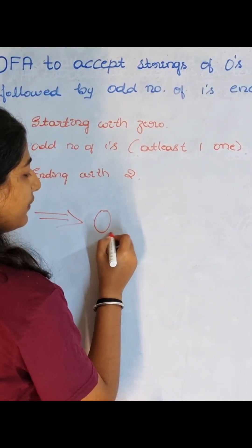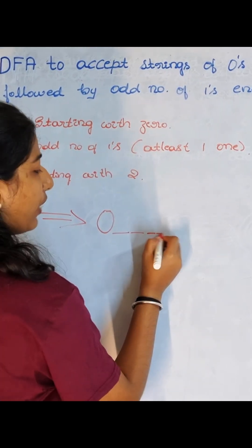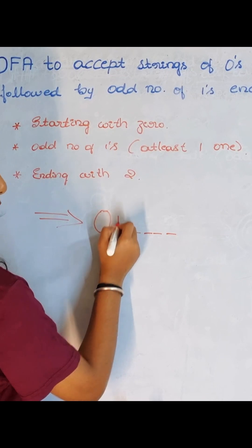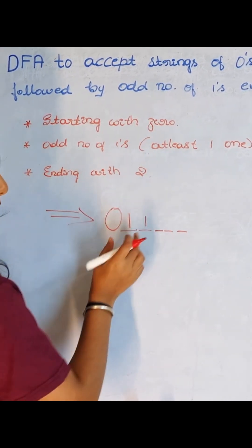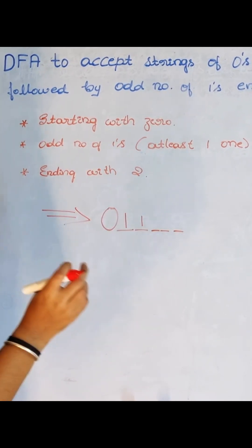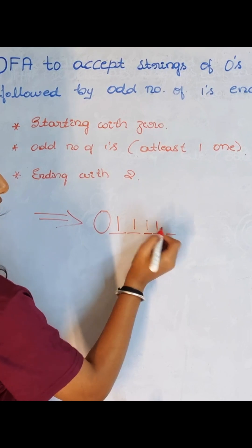We can have one 1, or three 1s, or five 1s. So one is okay. If I write two 1s, this is not okay because it is an even number. Three 1s is also okay. Four is not okay.